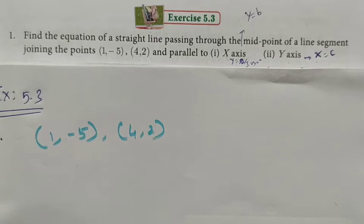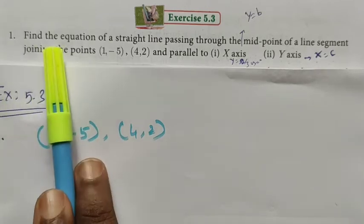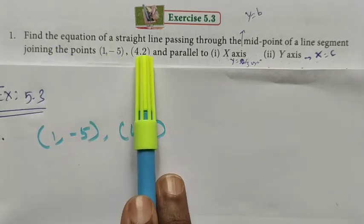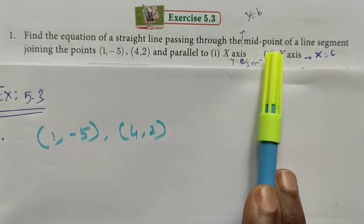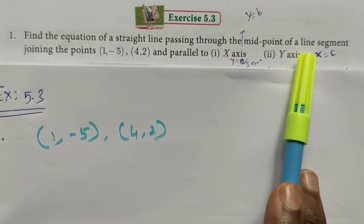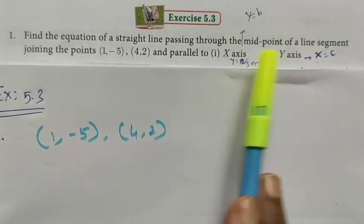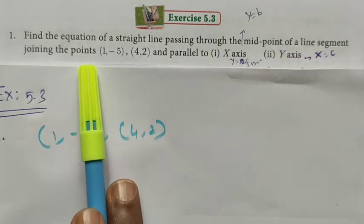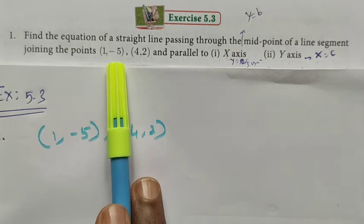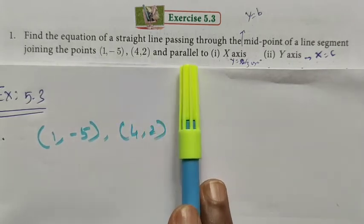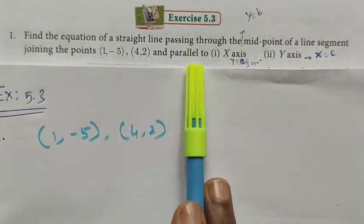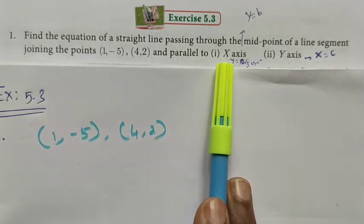Hi students, Class 10, Exercise 5.3, Question number 1. Find the equation of the straight line passing through the midpoint of the line segment joining the points (1, -5) and (4, 2), parallel to the x-axis and parallel to the y-axis.